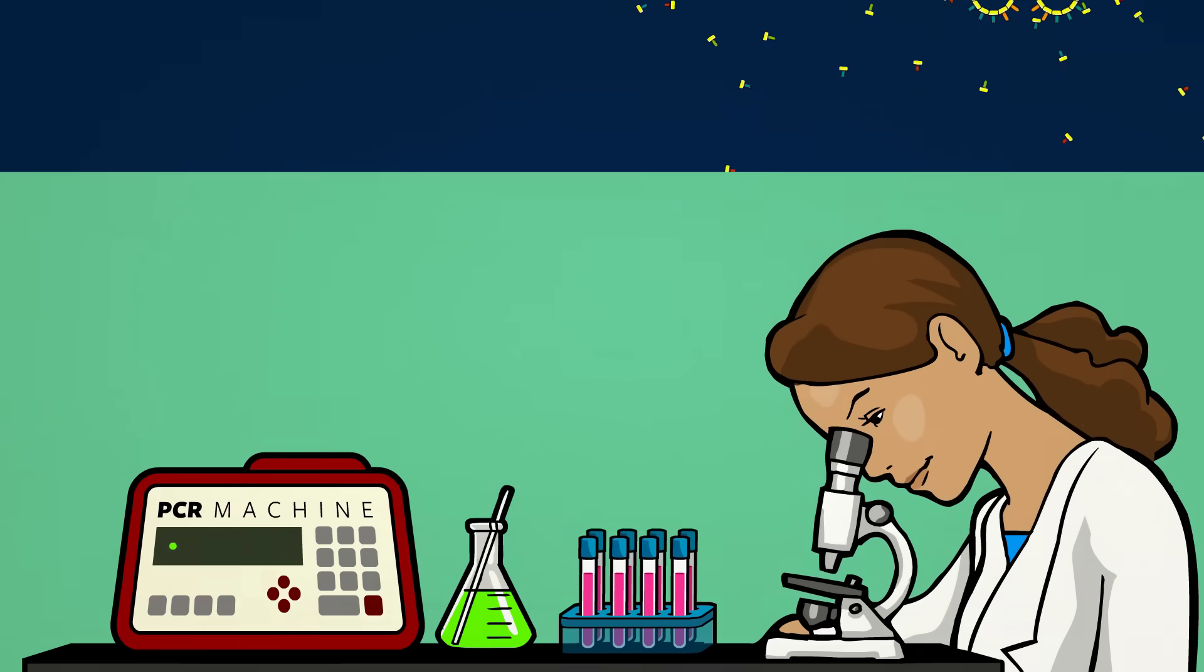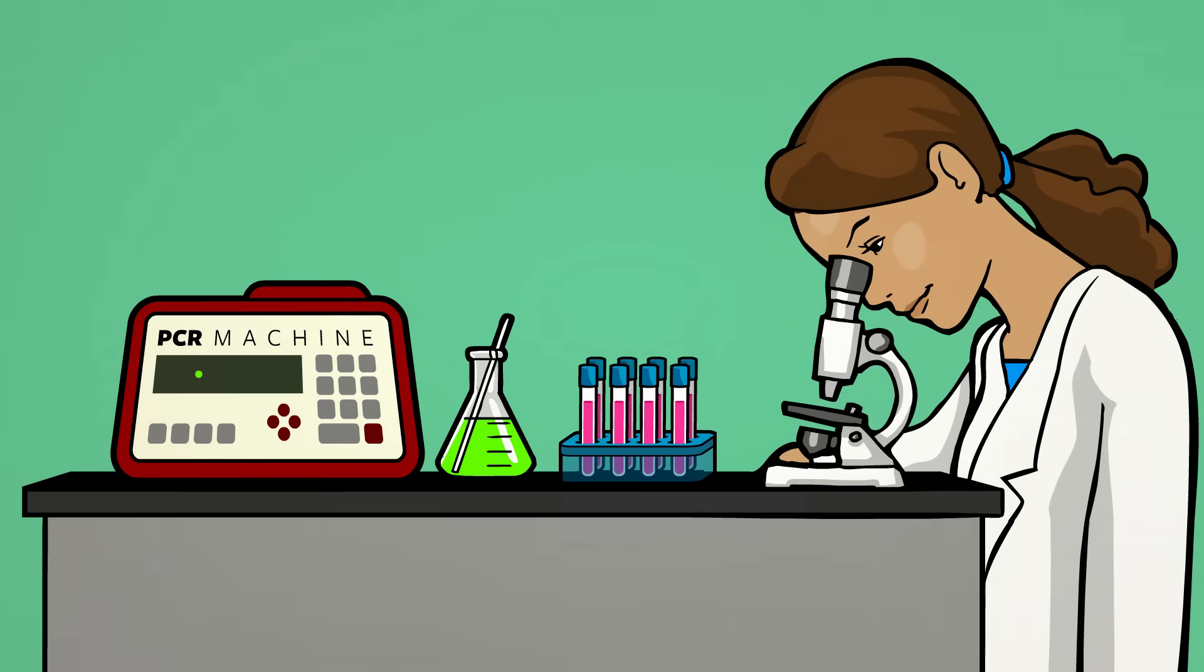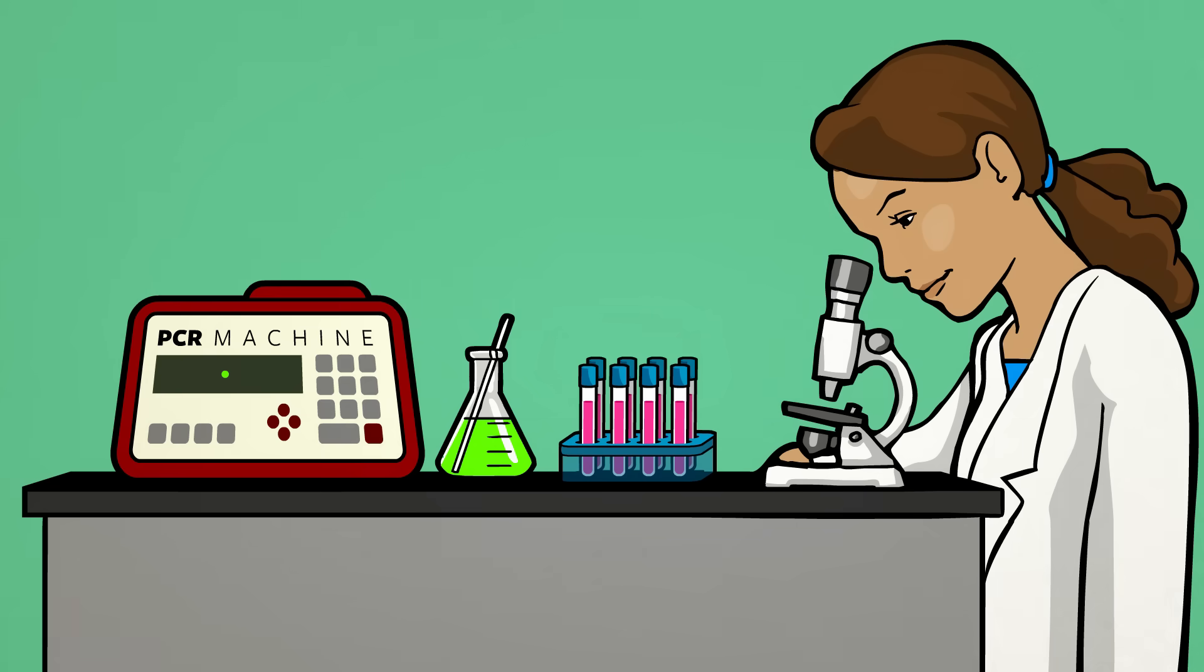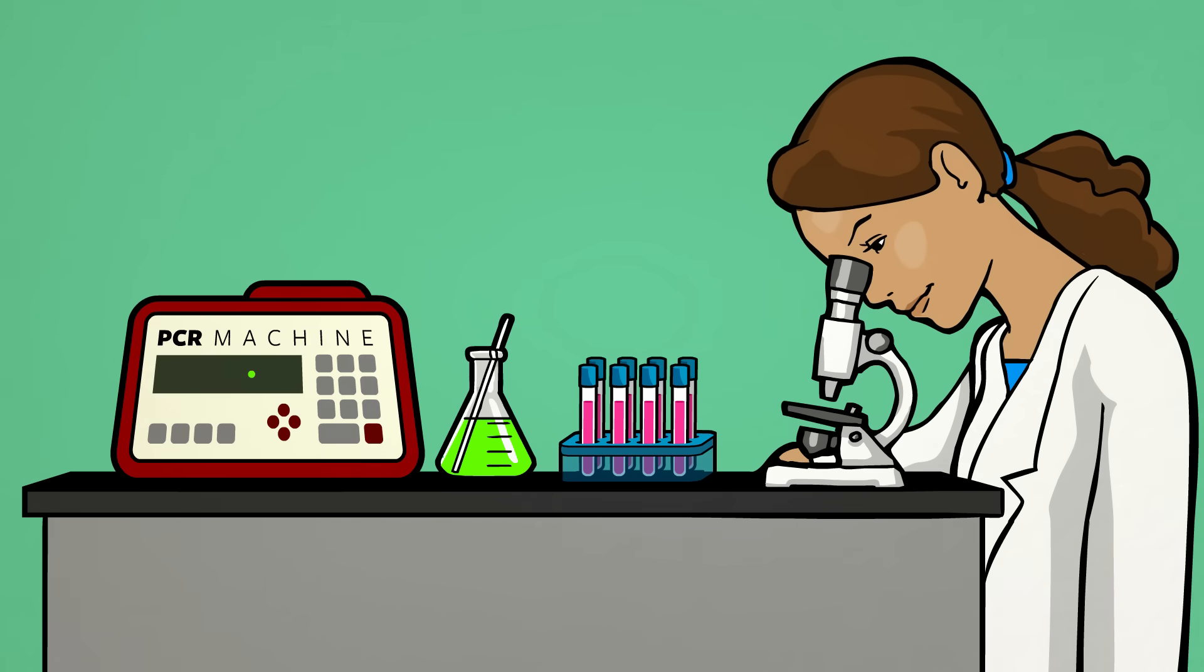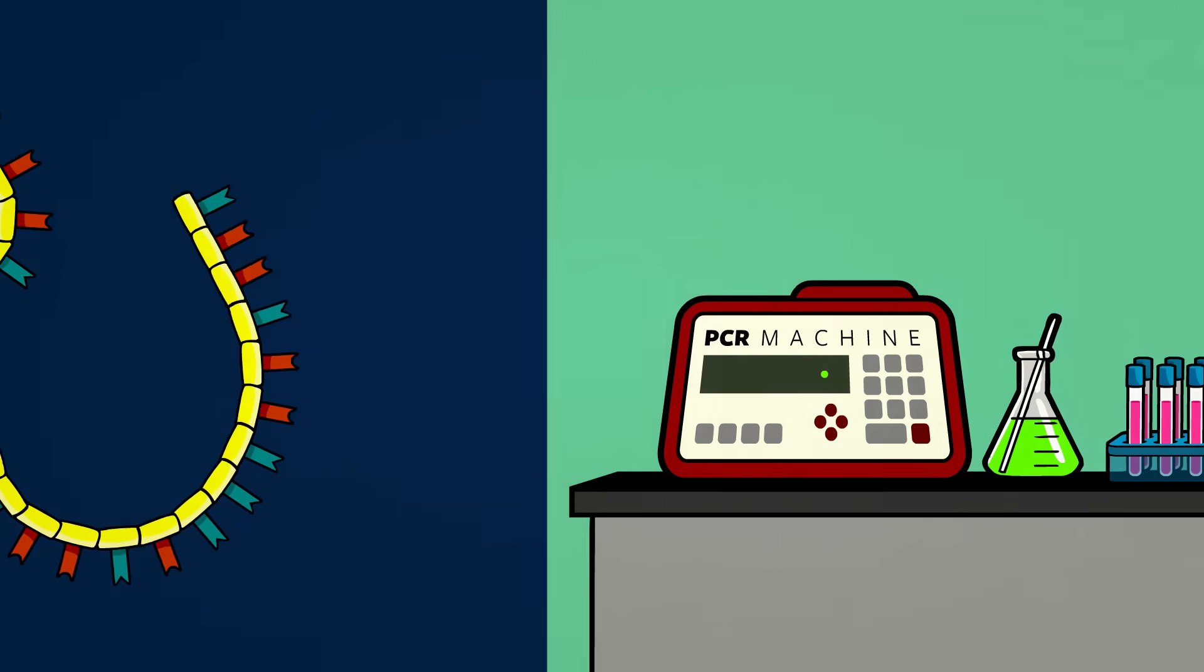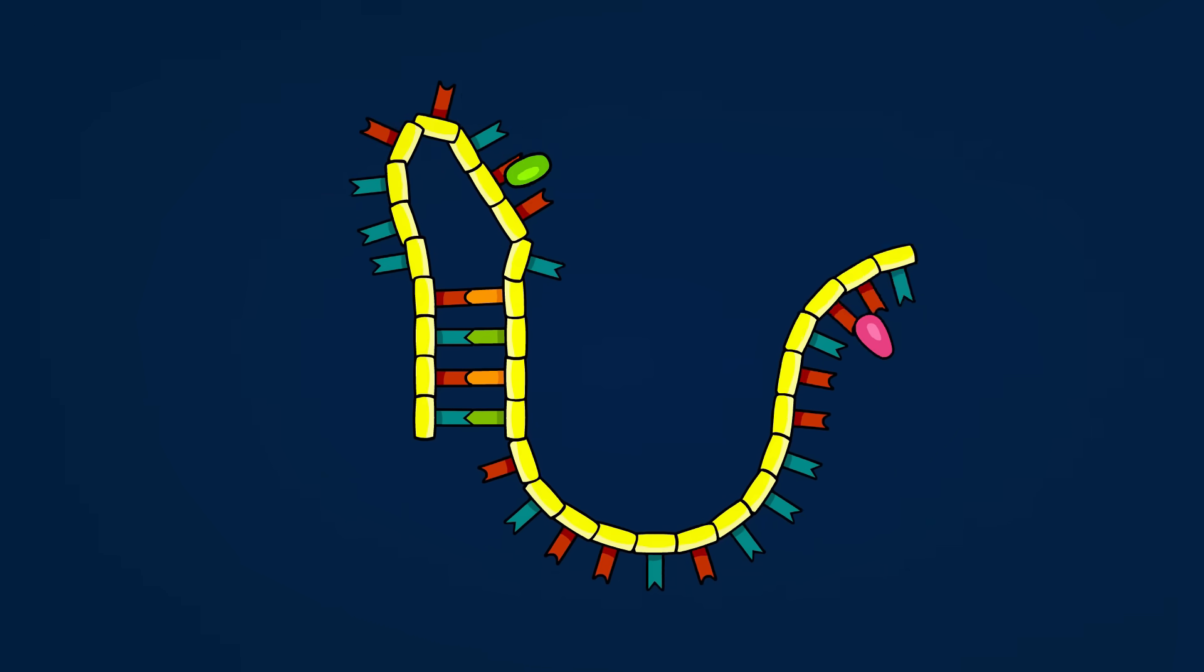To explore this idea, researchers at Simon Fraser University produced a large group of random RNA chains and examined them to see if any happened to be able to make nucleotides. Surprisingly, some actually could, but they weren't very efficient.